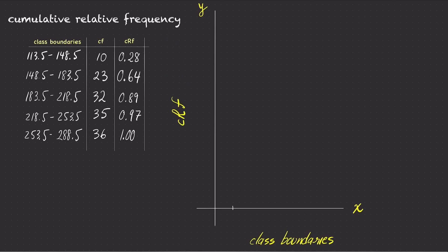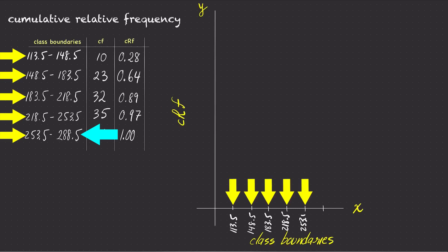Looking at the class boundaries, we can see that there are five lower class boundaries plus one upper class boundary at the end. So we will use six marks on the x-axis to label the five lower class boundaries plus one upper class boundary at the end.